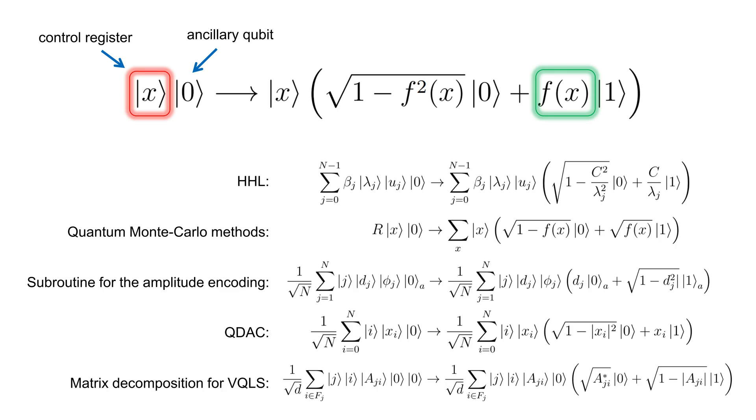Here are a few examples: Harrow-Hassidim-Lloyd algorithm which solves the system of linear equations, quantum Monte Carlo methods, subroutine for the amplitude encoding, quantum digital to analog conversion, and matrix decomposition for variational quantum linear solver.